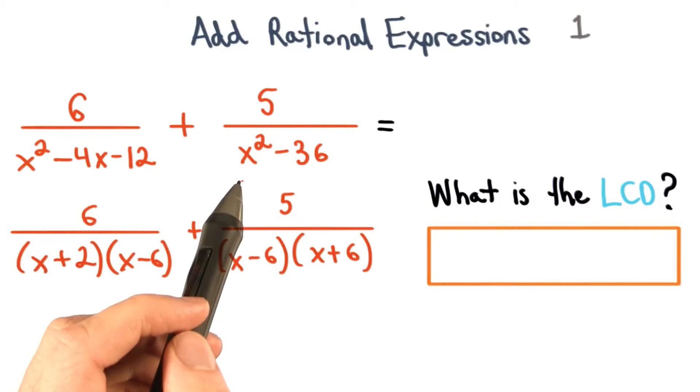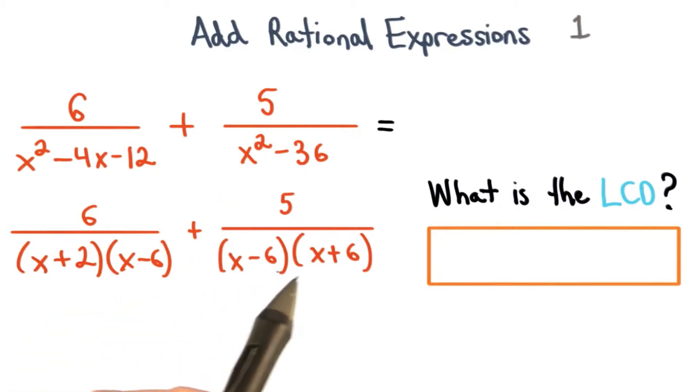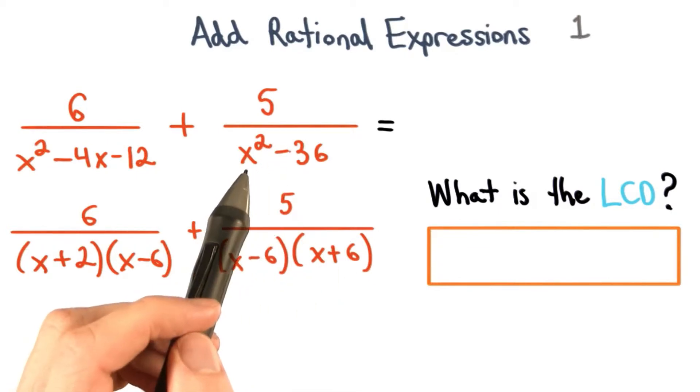The factors for x squared minus 36 would be x minus 6 and x plus 6. This is just the difference of two perfect squares.